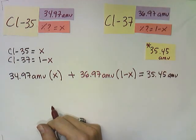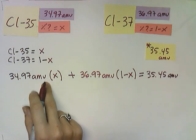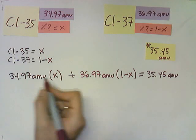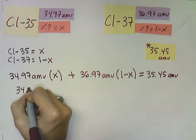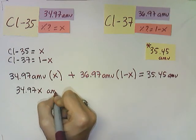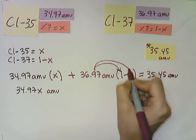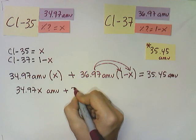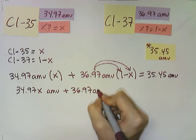Now that we have our equation, we can start solving. So there's really nothing I can do for the first one. It's just 34.97 times x, so it will be 34.97x, and our units are AMUs. But in this one, I can multiply times 1 and times x, right?